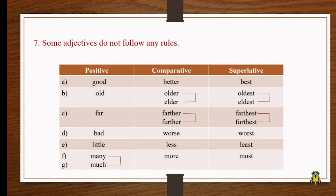There are some adjectives that do not follow any rules. For example, 'good' — the comparative degree is 'better' and the superlative degree is 'best.' These forms change entirely. Good, better, best.